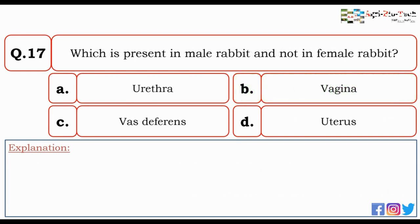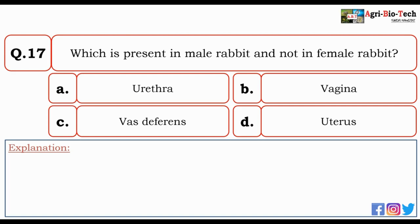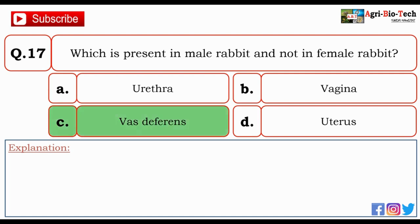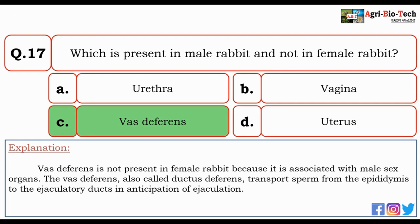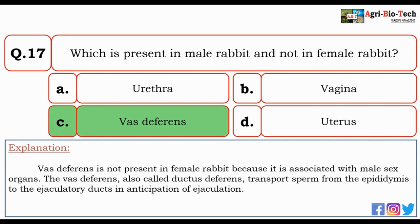Next question: which is present in male rabbit but not in female rabbit? Options: urethra, vagina, vas deferens, or uterus. The correct option is C — vas deferens. Vas deferens is not present in female rabbit because it is associated with male sex organs. The vas deferens, also called ductus deferens, transports sperm from the epididymis to the ejaculatory duct in anticipation of ejaculation.